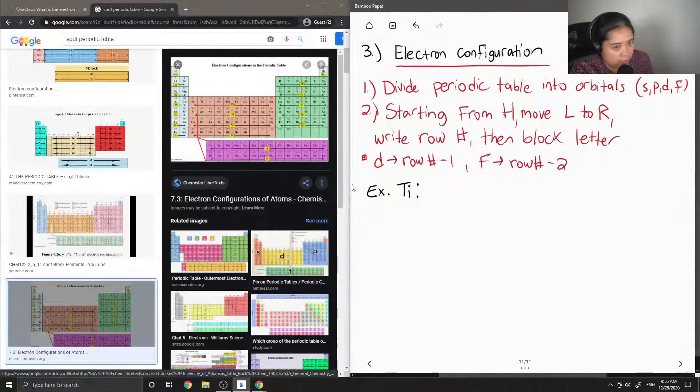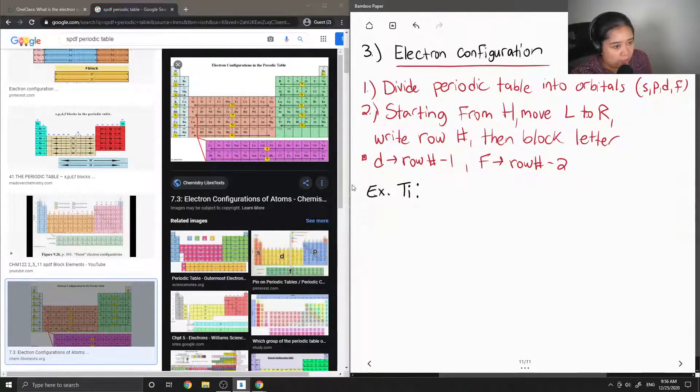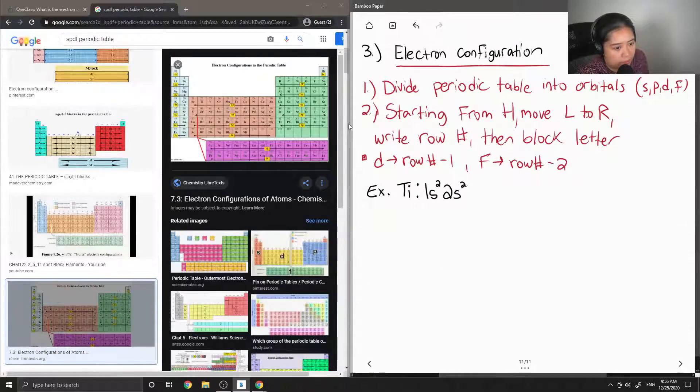So starting from hydrogen, if we move left to right, when we write the row number it's row one, the block letter is s, and then to show the number of electrons up to helium, it is 1s2. Then we can do the same thing for row two, block s, and then up to the beryllium, which is here, it'll be 2s2. And then moving over to the p block, it is 2p6. So now we're at neon.